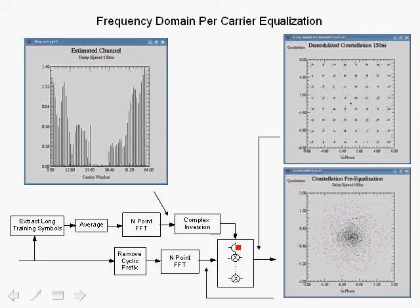We multiply times the inverse of the estimated channel, and we obtain the equalized carriers, and here we're showing the constellation after equalization.